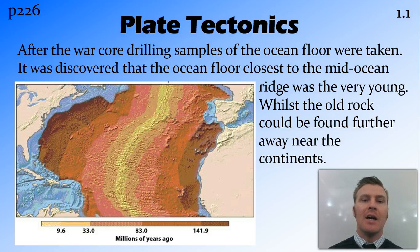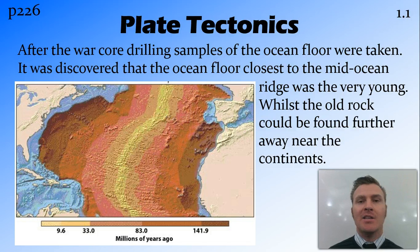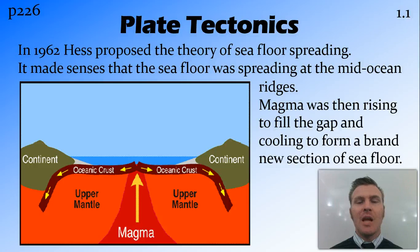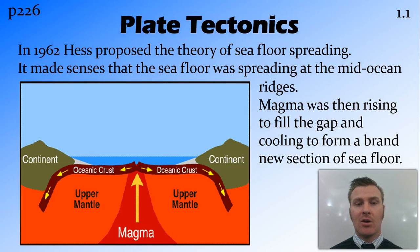They also found that the age of the ocean floor was symmetrical — like a butterfly pattern — on either side of the ridge, which suggested ocean floor spreading. So in 1962, Hess proposed the idea of sea floor spreading, which led to our current understanding of plate tectonics.